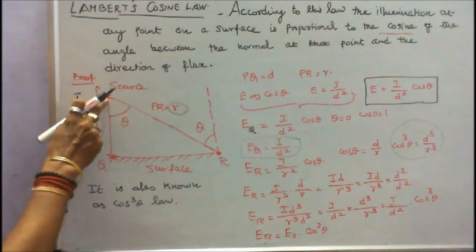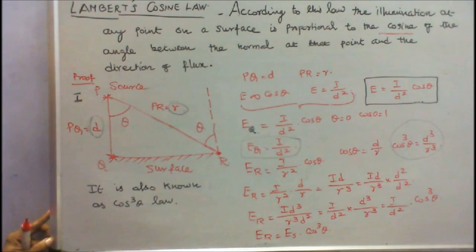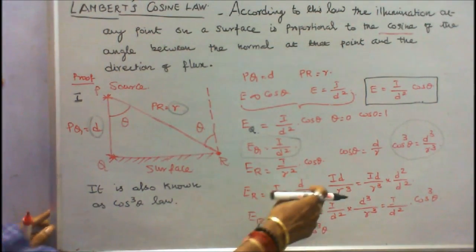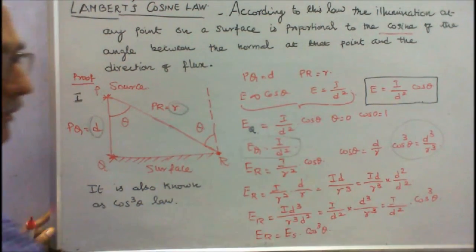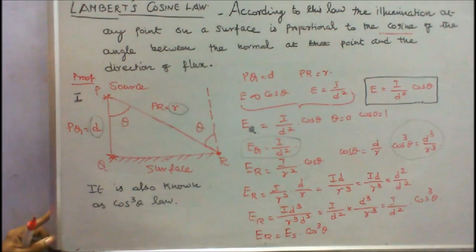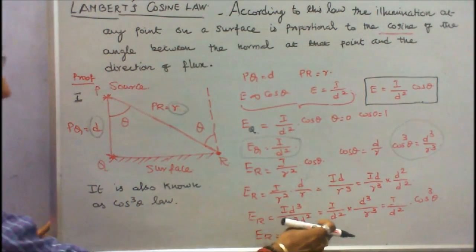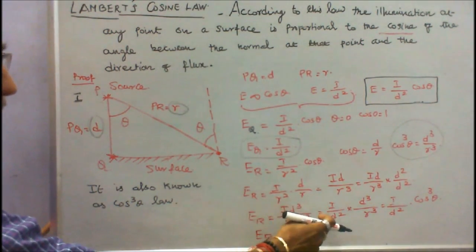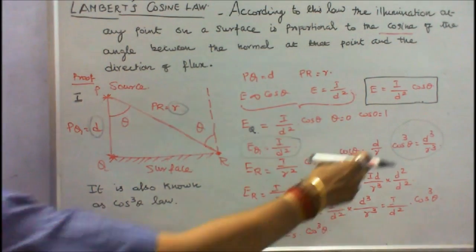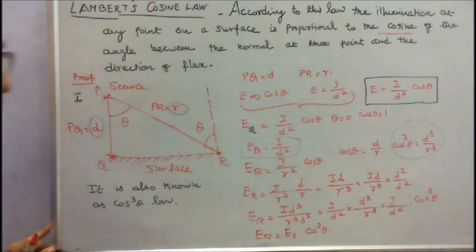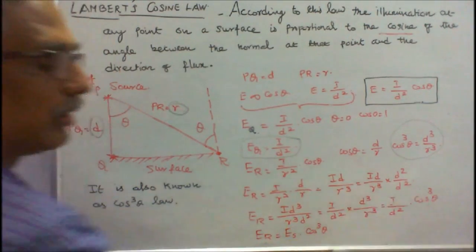R is nothing but distance between P and R. So simply I simplify the equation. I multiply and divide by D square. I will get I into D cube divided by R cube. I rearrange this: I by D square into D cube by R cube. D cube by R cube is equal to cos cube theta. I can write I by D square into cos cube theta.